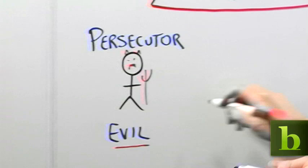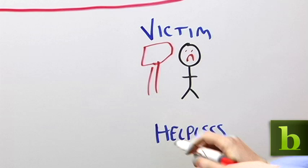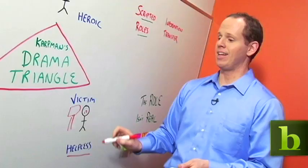Then over here we have the poor, sad victim. The victim, who here is getting hit by a hammer, is helpless to prevent any trouble from happening and is taken advantage of by the persecutor.